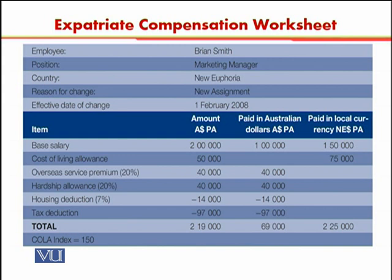Another important piece of information not given directly in the worksheet is the rate of exchange. The rate of exchange of the Australian dollar to local currency is 1.5 — meaning one Australian dollar equals 1.5 dollars of New Euphoria. The compensation package will be decided accordingly.